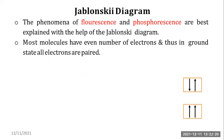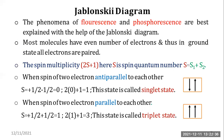Jablonski diagram. The phenomena of fluorescence and phosphorescence are best explained with the help of the Jablonski diagram. Most molecules have an even number of electrons, and in the ground state all electrons are paired. The spin multiplicity is 2S + 1, where S is the spin quantum number and S = S₁ + S₂. When the spins of two electrons are antiparallel, S = 0 and multiplicity = 1 — this is called the singlet state. When spins are parallel, multiplicity = 3 — this is called the triplet state.